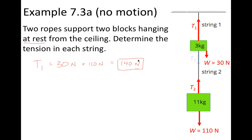Because the block is at rest, our system is at rest, so the forces external to the system must be balanced. We can then say that T2, which is the total force up, has to equal the total force down, which is just the weight of the second block — 110 newtons.